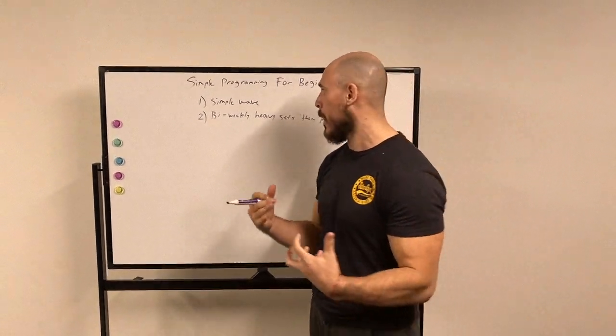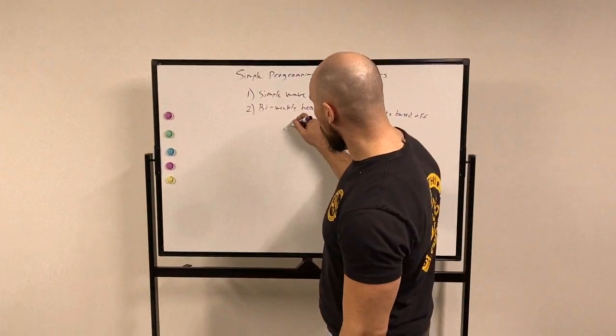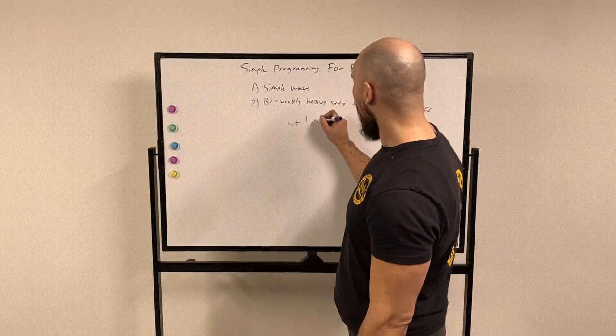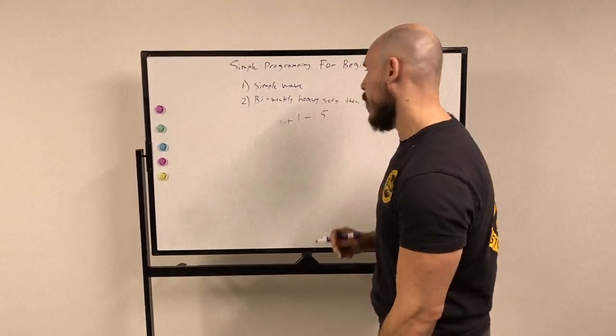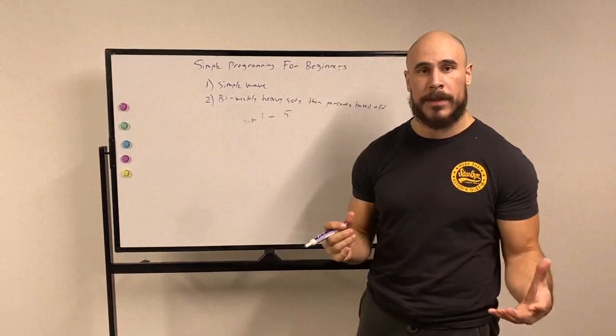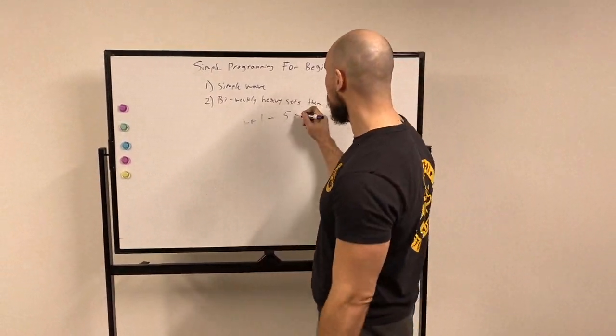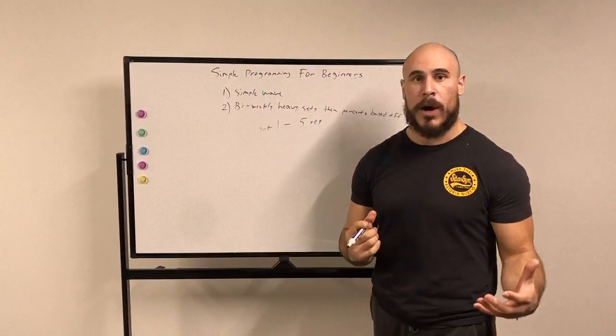In this model, on week one I would work up to a heavy set of five - or if I want to go a bit heavier, I can do a heavy set of three or something like that. But I'll do a heavy set of five reps. I'll use my same example of a squat, a barbell back squat.